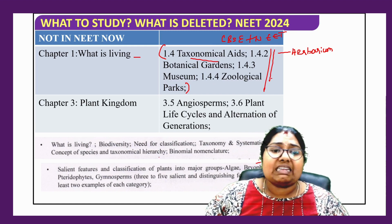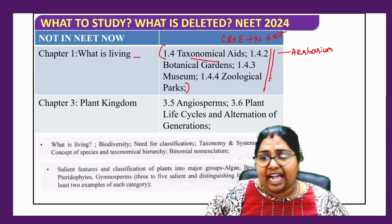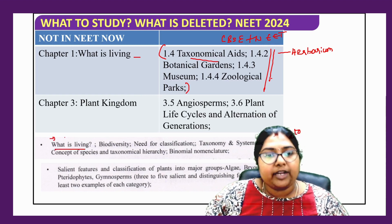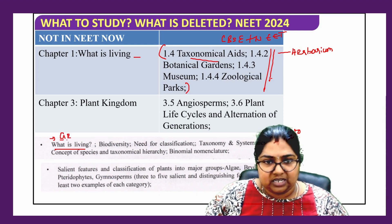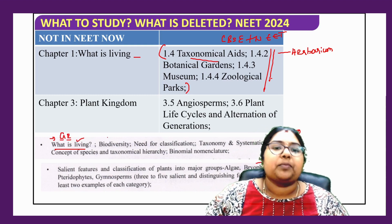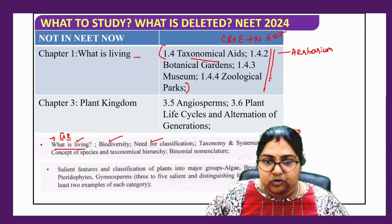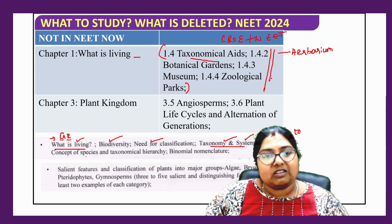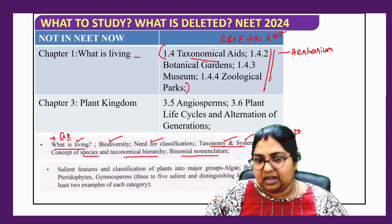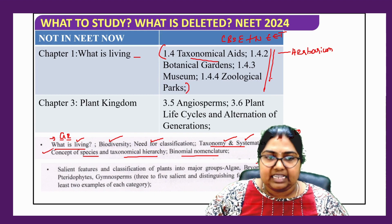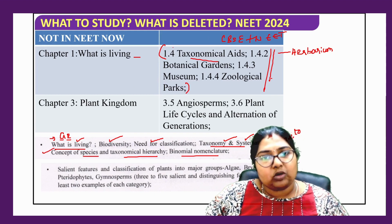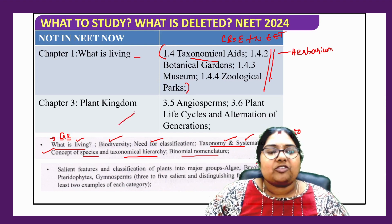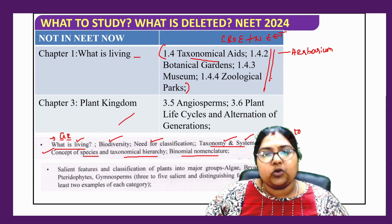So what do you have to study in Chapter 1? You have to study 'What is Living,' including growth and reproduction, biodiversity, need for classification, taxonomy, systematics — all these terms are very important. Concept of species, taxonomical hierarchy, and binomial nomenclature — everything is there. What is deleted from Chapter 1 is only the taxonomical aids. Chapter 2: everything is there, nothing is left out.